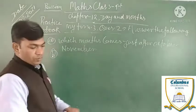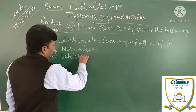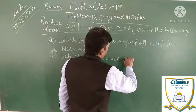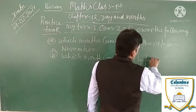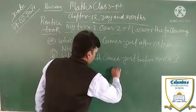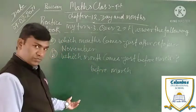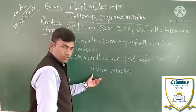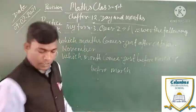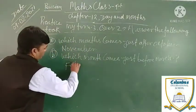Next question: which month comes just before March? First we will write March, and before March — just before March — which month will come? February. February comes just before March. Very good, extremely good!